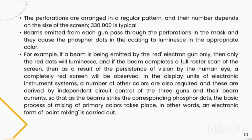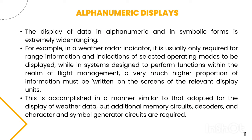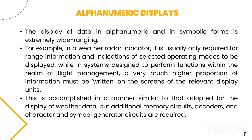In other words, the electronic form of paint mixing is carried out. The display of data in alphanumeric and symbolic forms is extremely wide-ranging. For example, in a weather radar indicator, it is usually only required for range information and indications of selected operating modes to be displayed, while in systems designed to perform functions within the realm of flight management, a very much higher proportion of the information must be written on the screens of relevant display units. This is accomplished in a manner similar to that adopted for the display of weather data, but additional memory circuits, decoders, and character and symbol generator circuits are required.